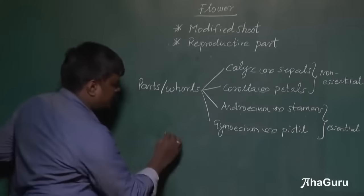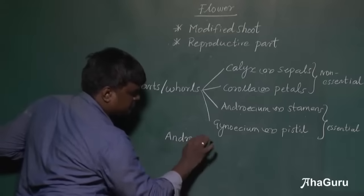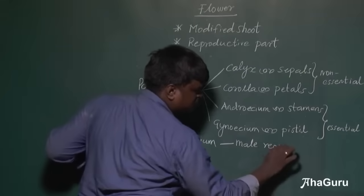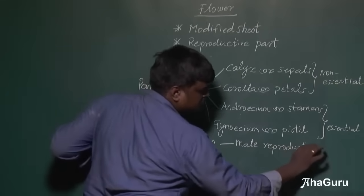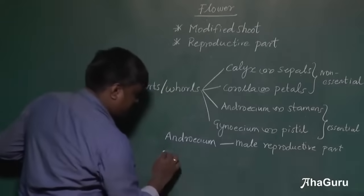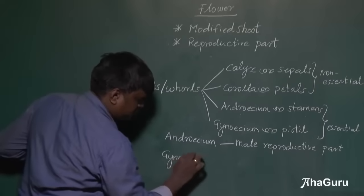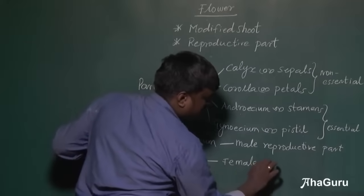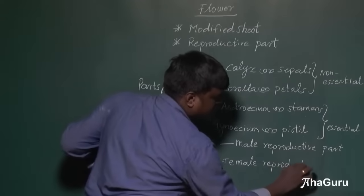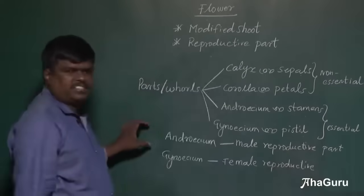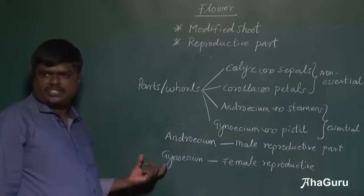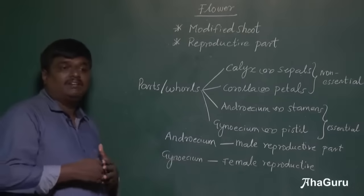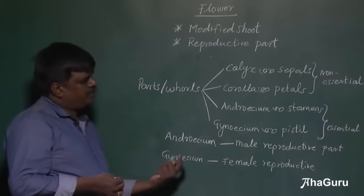The androecium is the male reproductive part, whereas the gynoecium is the female reproductive part. Both are very essential because in sexual reproduction, without the male and female reproductive parts, the process of sexual reproduction cannot occur. So androecium and gynoecium are very, very important.